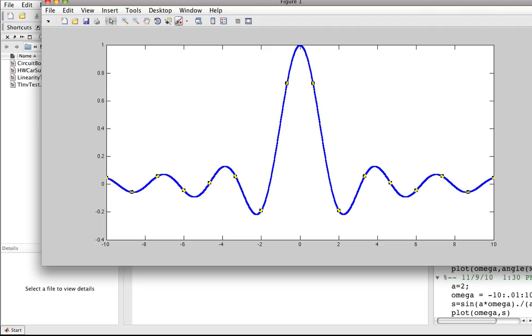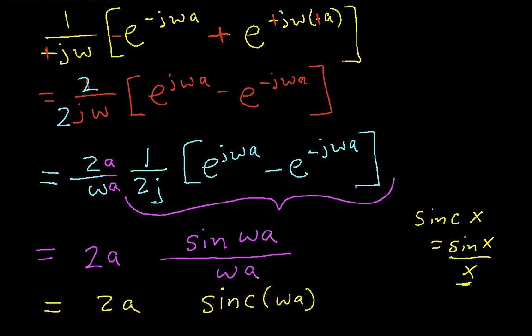So, there you have it. The idea that the Fourier transform of a pulse, of a rectangular pulse, is the sinc function. And with that, we will conclude this video.